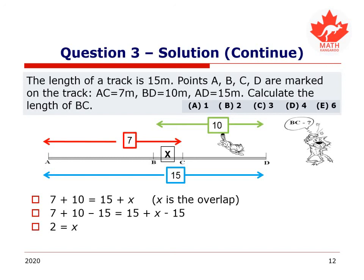Let's subtract 15 from both sides of the equation. On the one hand, we have x, and on the other we have 17 minus 15 equals 2. x equals 2 meters, B, final answer. And that is correct.